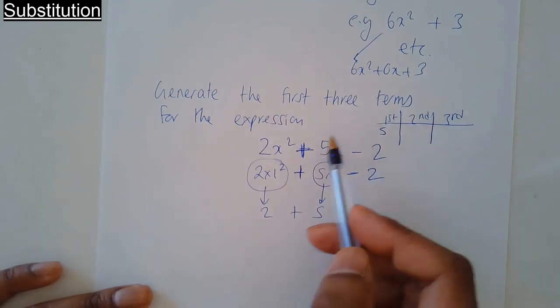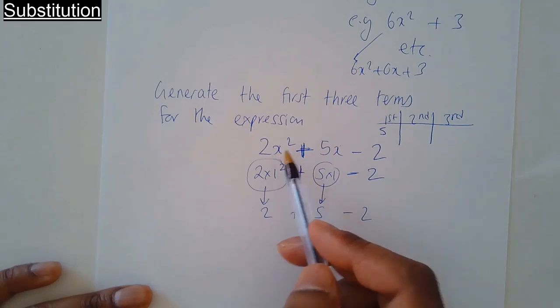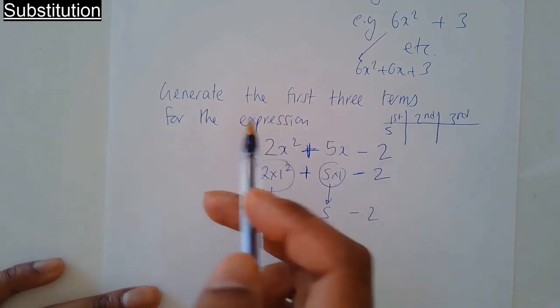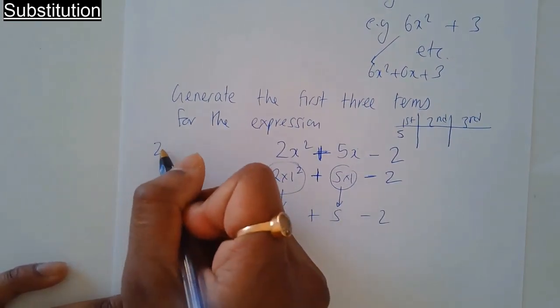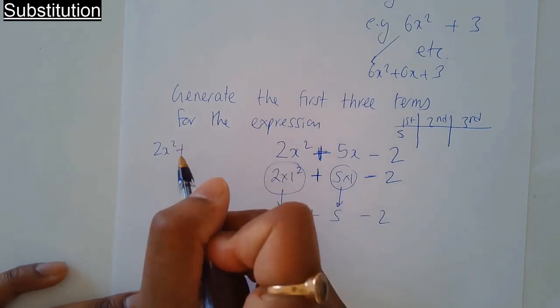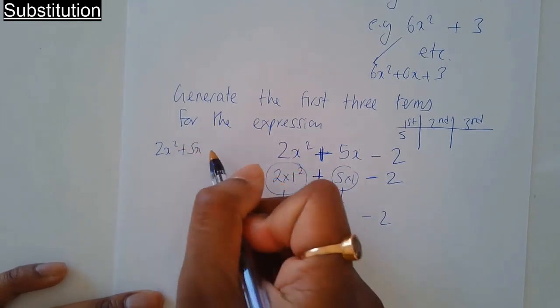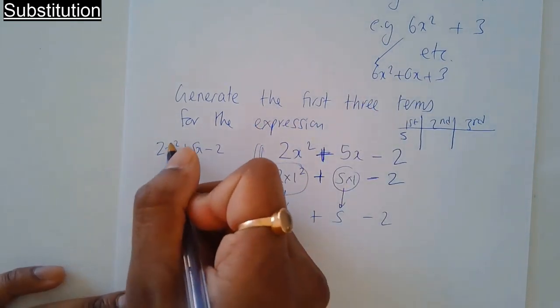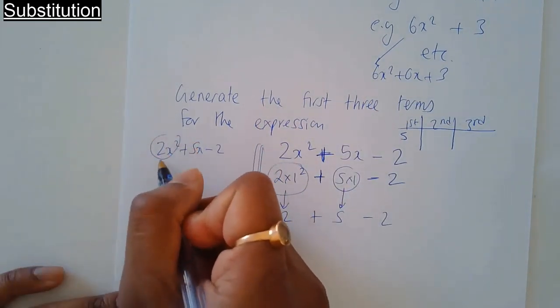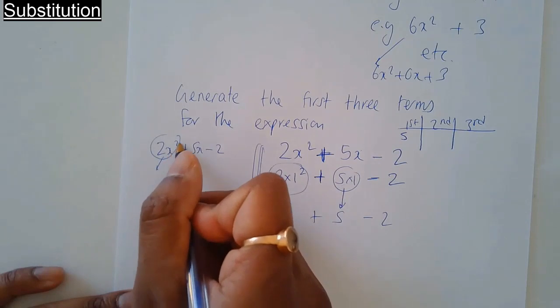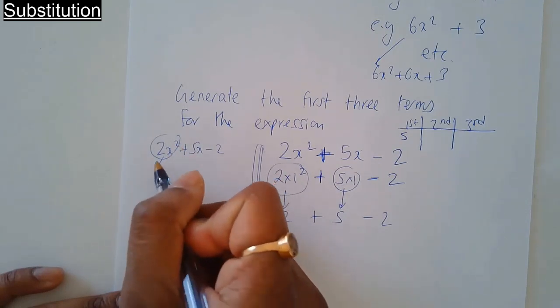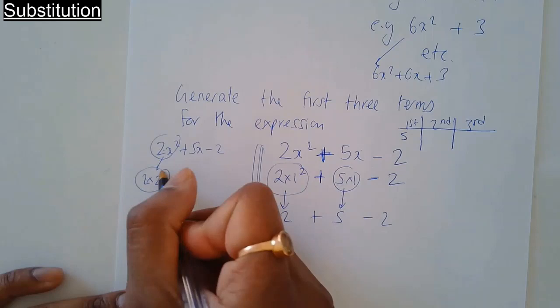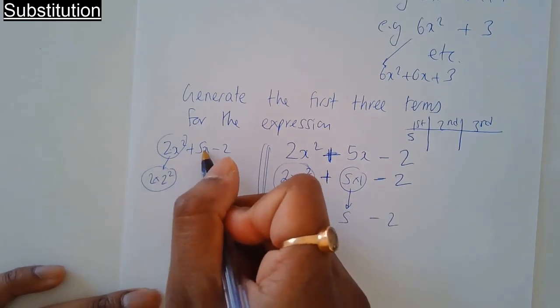Let's replace the x with the second one, 2. Replace x with 2, so you've got 2 squared and then times by 2. Replace x with 2.